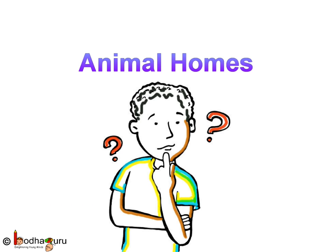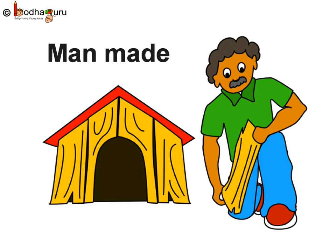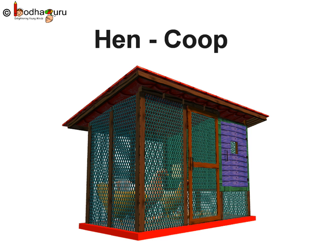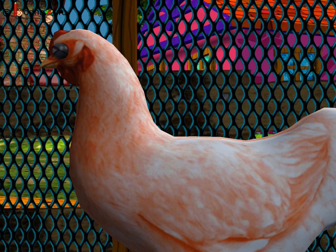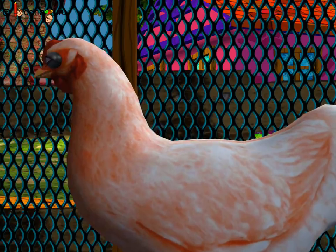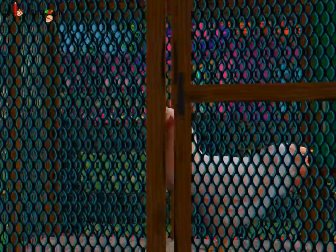Who makes the homes for animals? Some animals live in homes made by us, we human beings. The hens live in a coop. In the story, Mungerilal kept the hens in a coop.